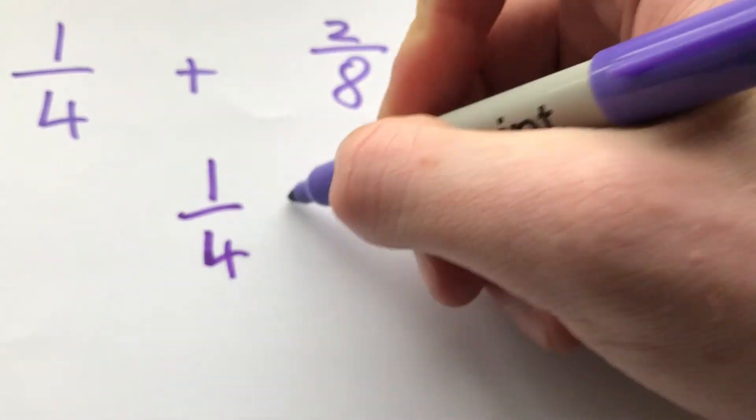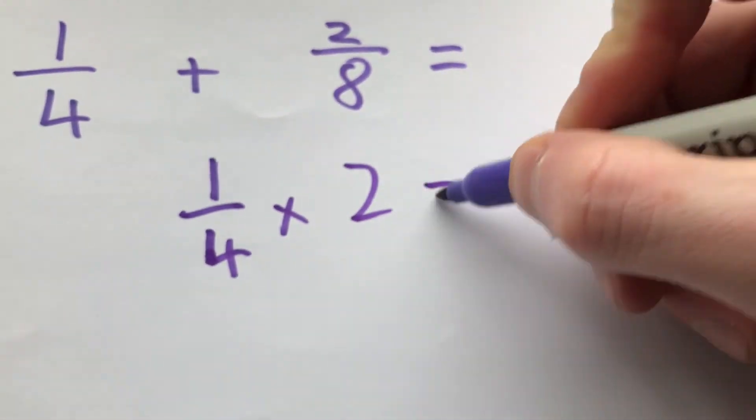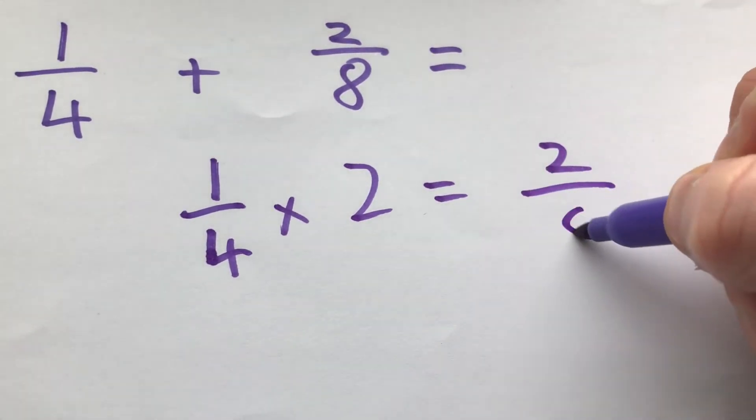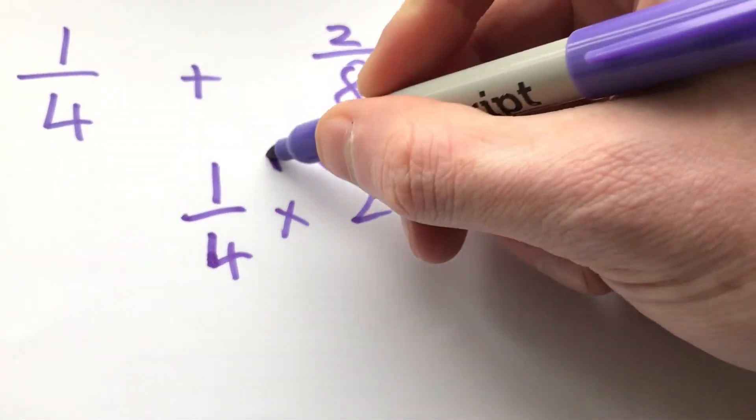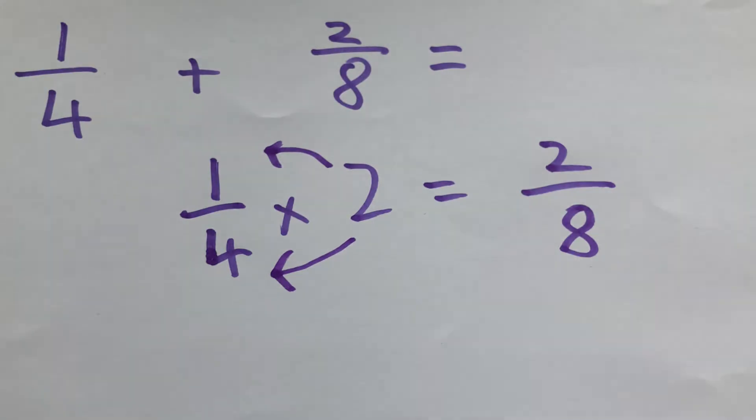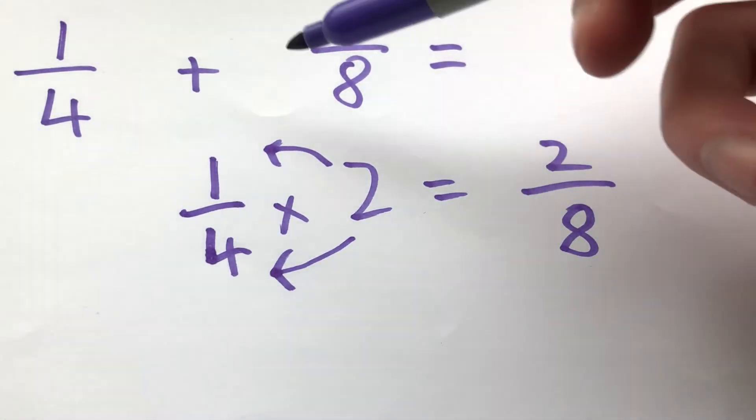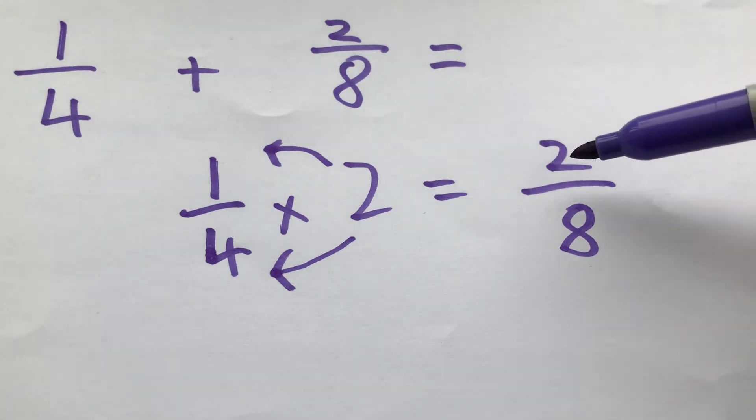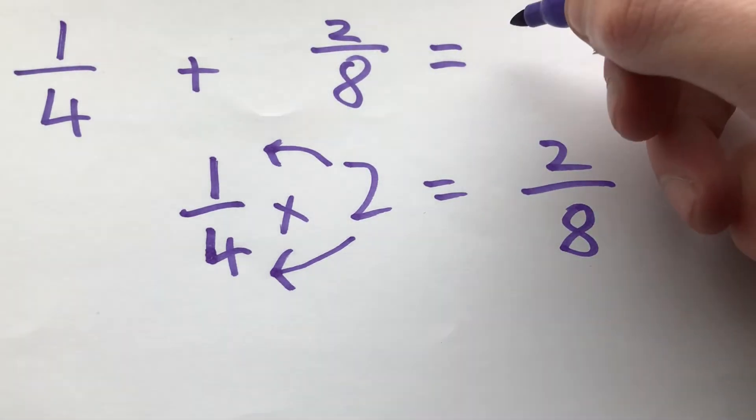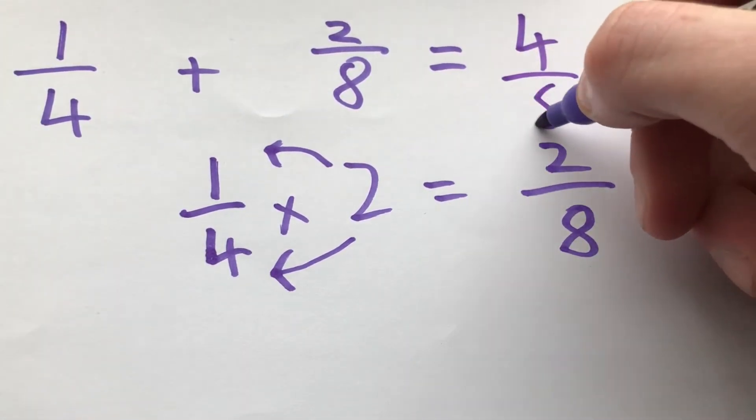So I'm multiplying the top and the bottom. Now we know that one quarter equals two eighths, and we have another two eighths up here, we can add them together. Two eighths and two eighths equals four eighths.